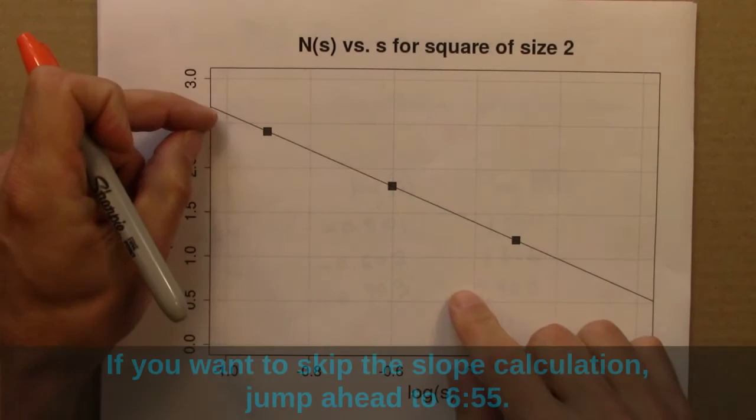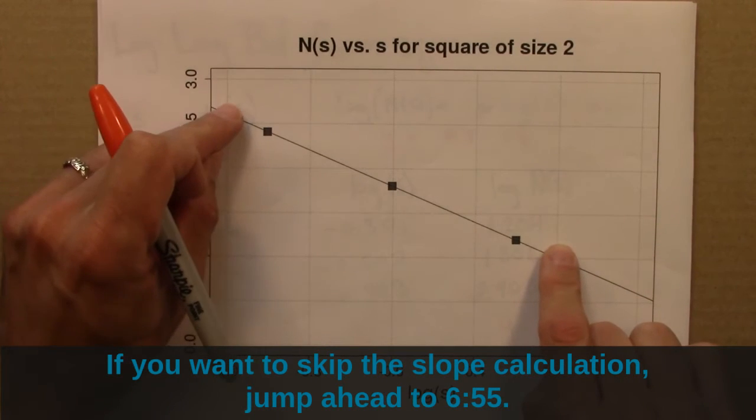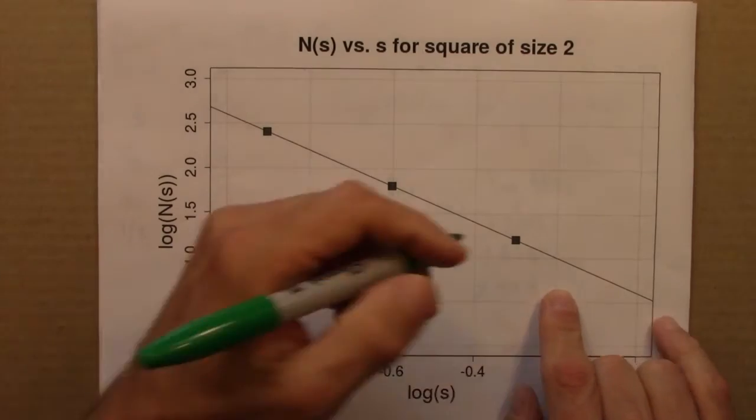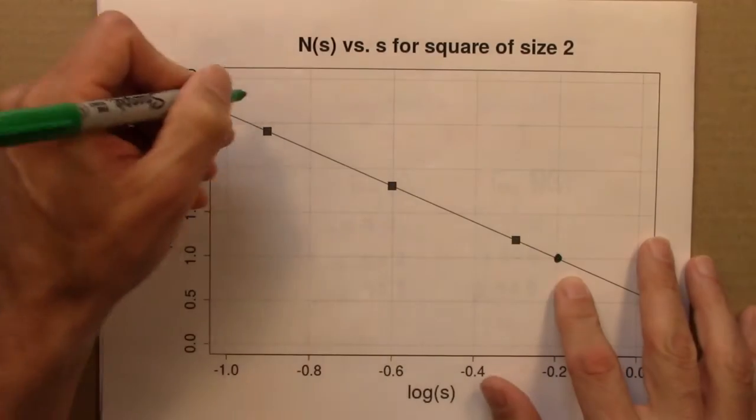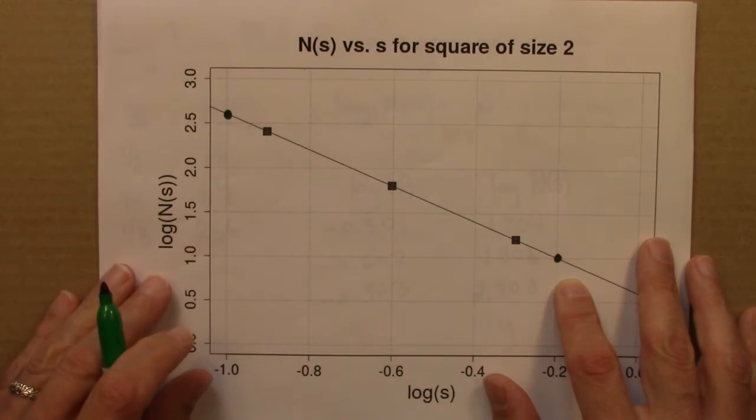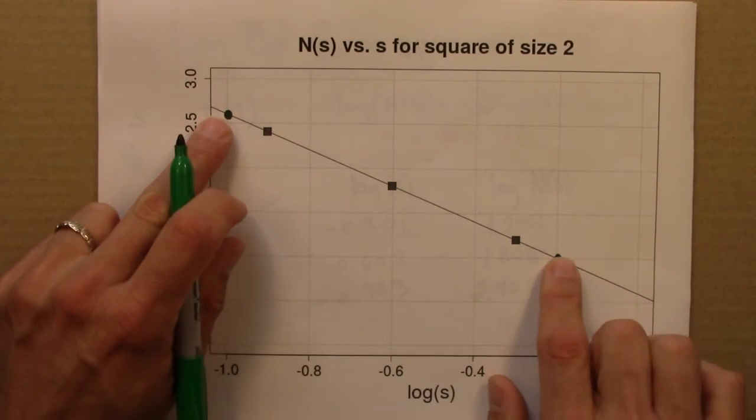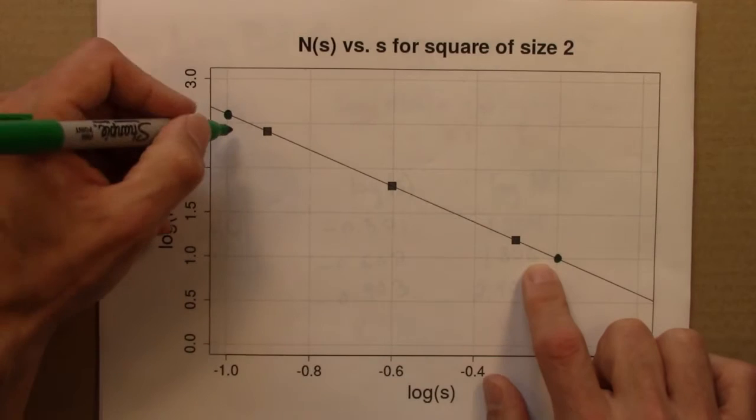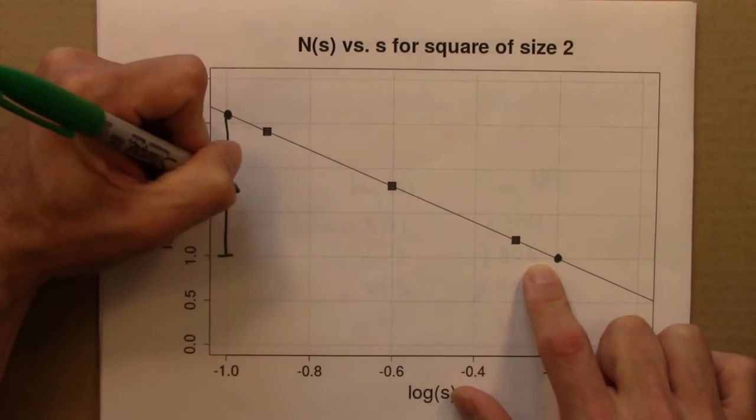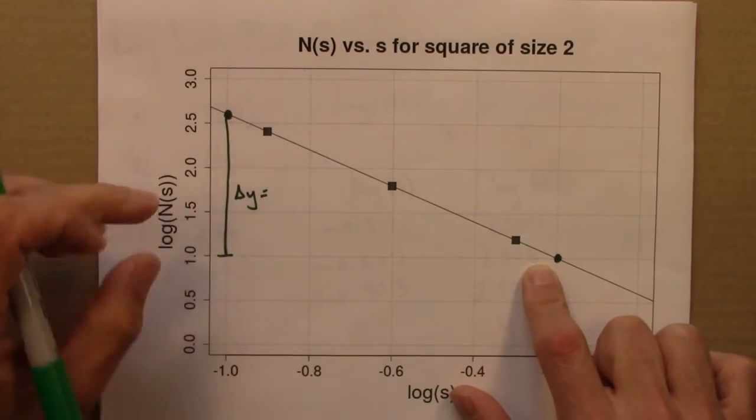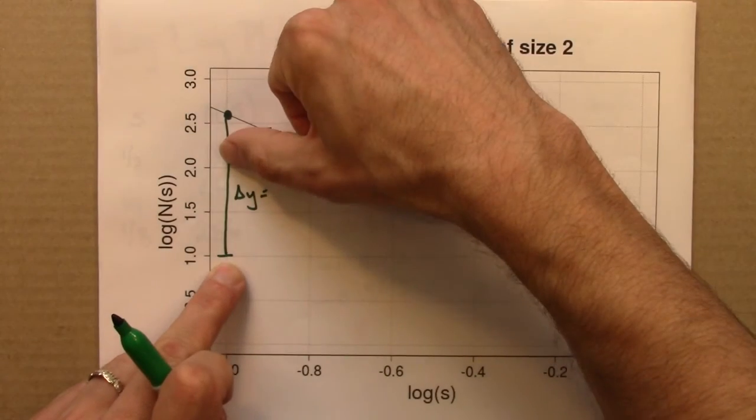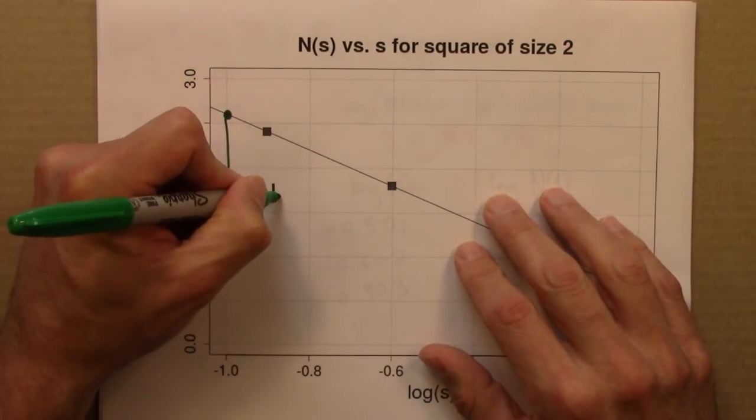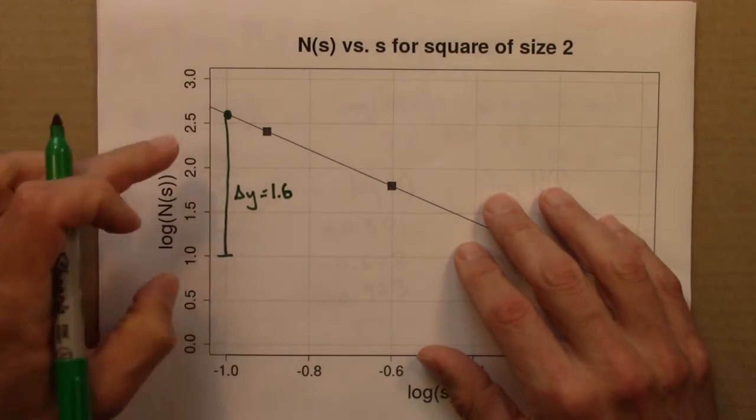So let's figure out the slope of this line. There are lots of ways you can do that. You need to choose two points on the line and then figure out the rise, figure out the run. I'm going to choose as my two points this one and that one. So I need to figure out delta y. That's this distance. That's from here to here. That's one. This is 1.5. That's going to be about 1.6.